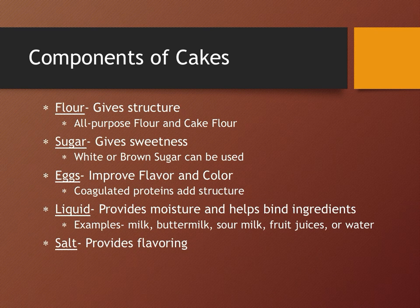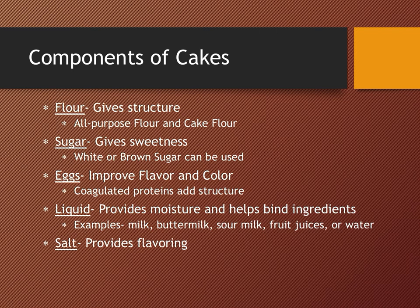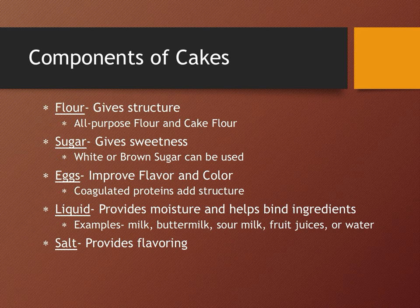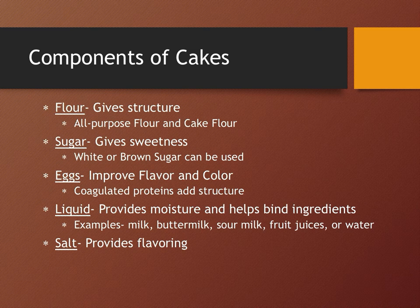The components of cakes include flour, sugar, eggs, liquid and salt. Flour gives structure to the cakes. We prefer to use all-purpose flour and cake flour for making various cakes. Cakes made with cake flour are more delicate and tender, as cake flour is ground finer than all-purpose flour and has a lower protein content — meaning less development of gluten. Sugar gives sweetness to our cakes; the most preferred sugars are white refined sugar or brown sugar. Sugar tenderizes the gluten and also improves the texture of the cake.